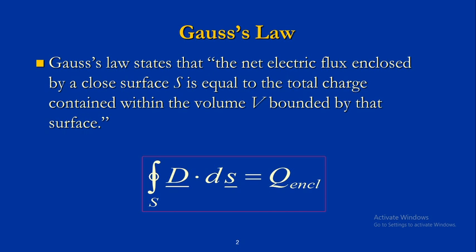Using Gauss's law, you can write the equation: D bar dot dS bar over a closed surface equals Q enclosed, or in other words, equals psi. Psi is the flux.